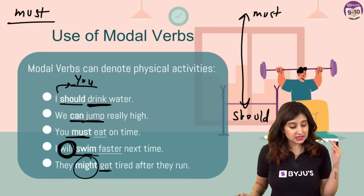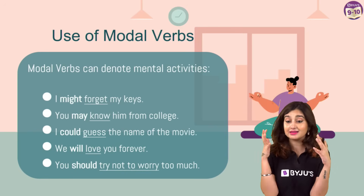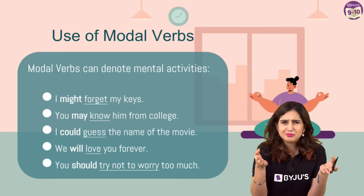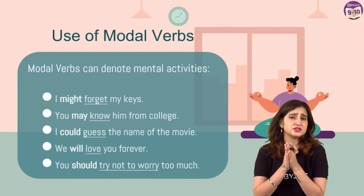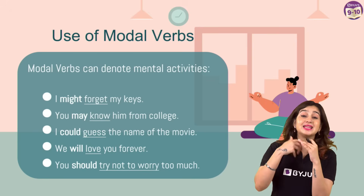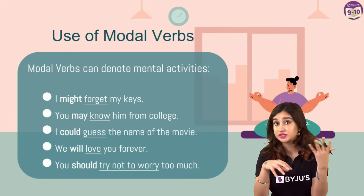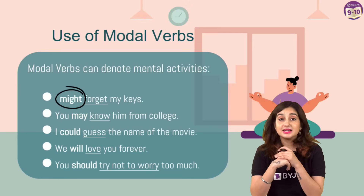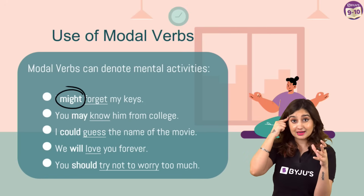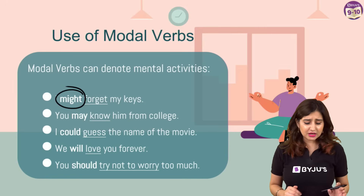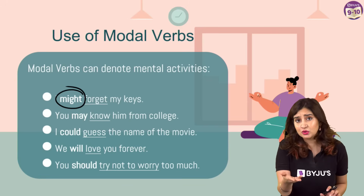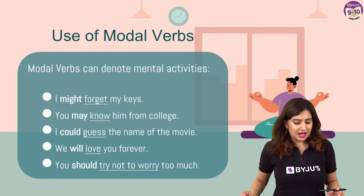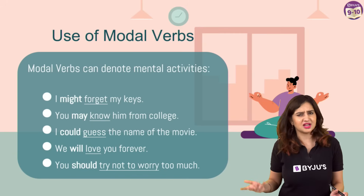That was modals for physical activities. Now let's go to modals for mental activities - like forget and guess. This is just to tell you that modals can be used with any kind of verbs, whether they denote physical or mental activities. 'I might forget my keys' - might is your modal, and there's a possibility that you'll forget. Forget is a mental activity. 'You may know him from college' - there's a possibility you know him.